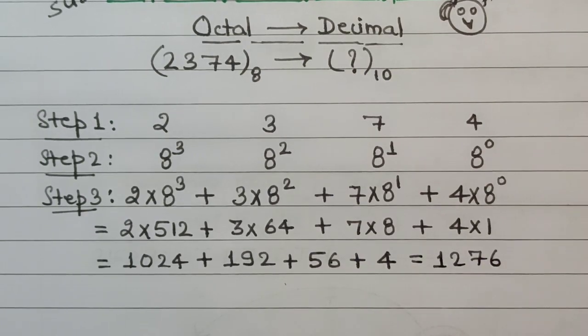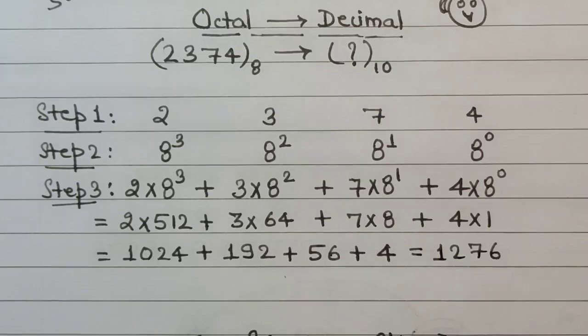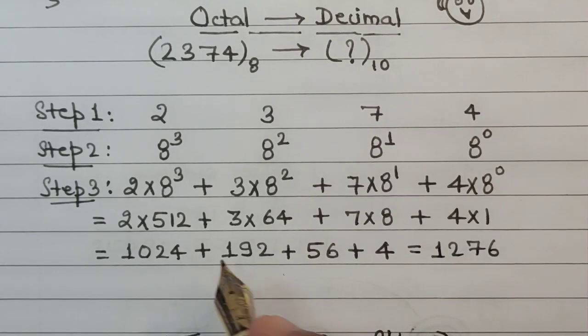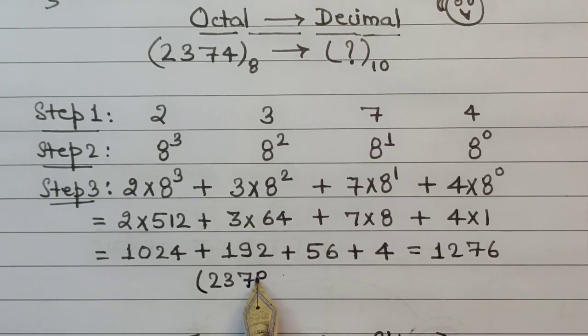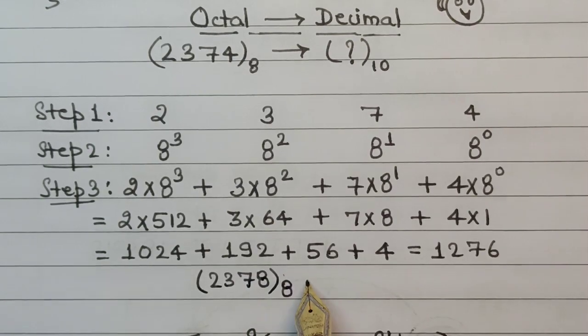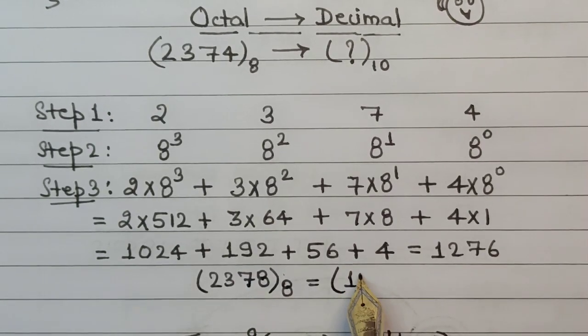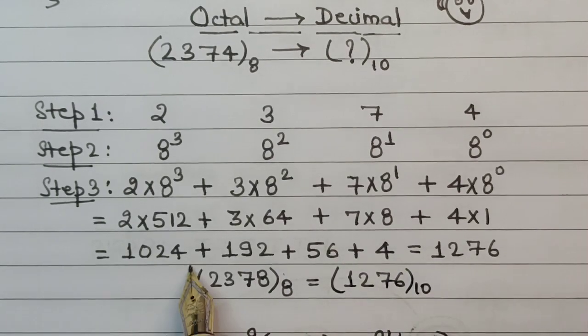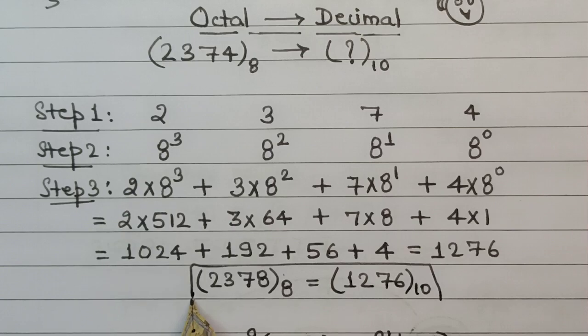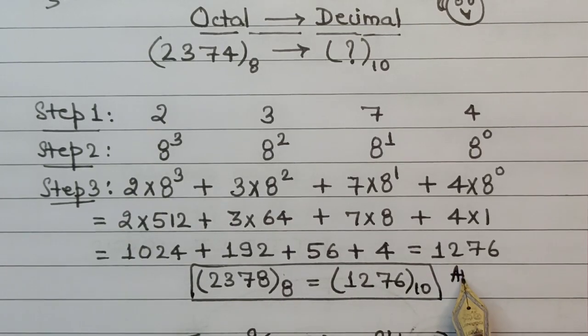So in the very last statement, all we do is just represent the old number which was in the octal format and then equate it with the new number that is 1276, which now is in the decimal format. This is the final answer to this particular problem.